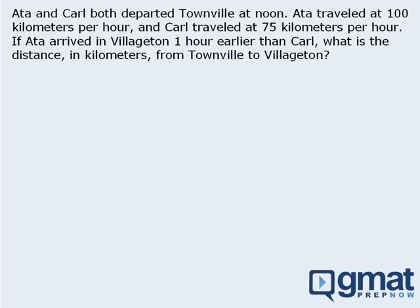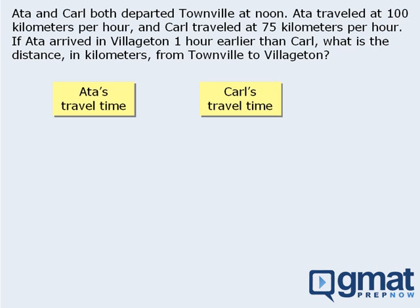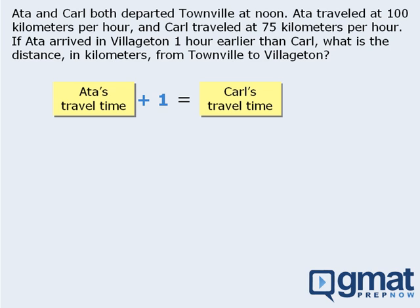To begin, what kind of equation can we write that shows the relationship between Ada's travel time and Carl's travel time? The question tells us that Ada arrives in Villagetan one hour earlier than Carl does. This means that Ada's travel time was one hour less than Carl's travel time. So if we add one hour to Ada's travel time, the two travel times will be equal.